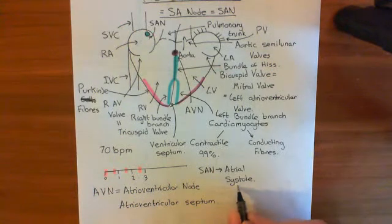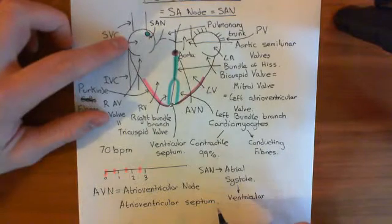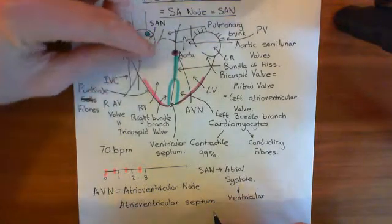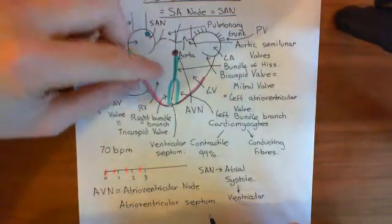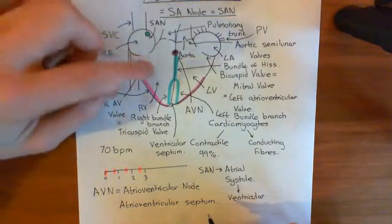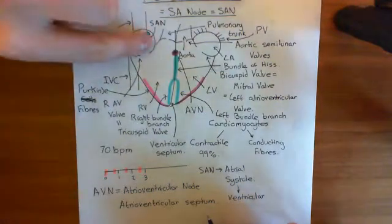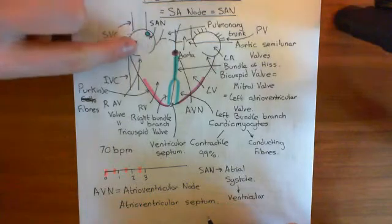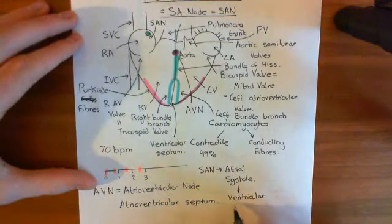What's going to happen next is you're going to get ventricular systole, and at the same time the atria will be starting to relax — atrial diastole — while you're getting ventricular systole. This is why the atrioventricular valves are very important in stopping the blood from going from the ventricles back into the atria, because they're a one-way system. The blood will push up against these valves, causing them to close perpendicular so the blood just won't be able to push them back into the atria.